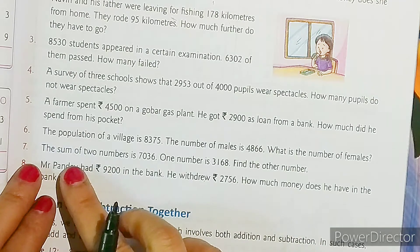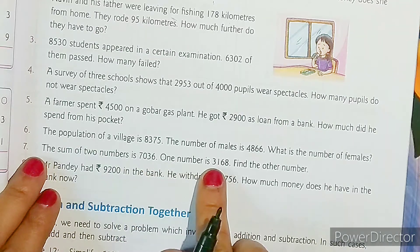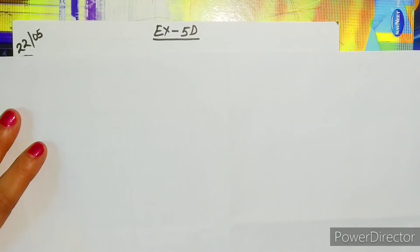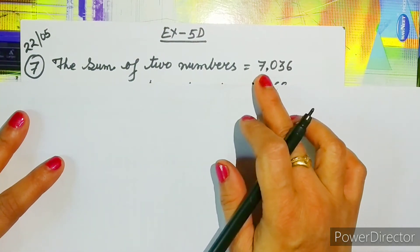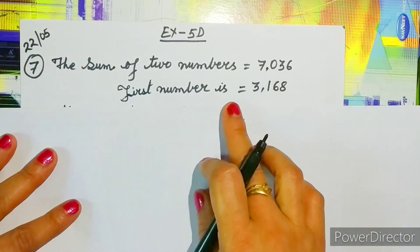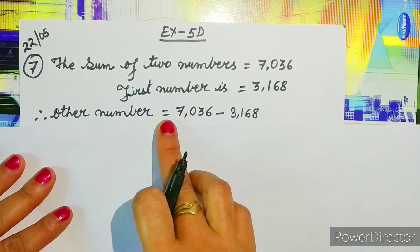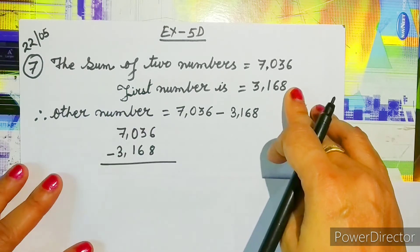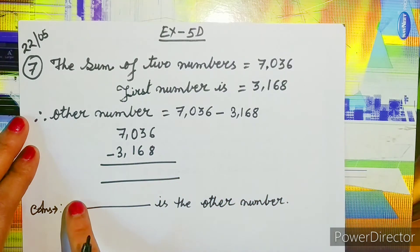Now let's move on to question number seven. The sum of two numbers is 7036. One number is 3168. Find the other number. The first statement: the sum of the two numbers is equal to 7036. The first number is equal to 3168. Therefore, the other number will be equal to 7036 minus 3168. Students, do the calculation, and whatever answer comes, fill it in the blank space. After that, write: is the other number.